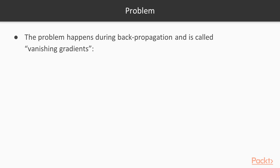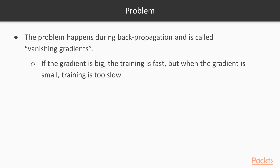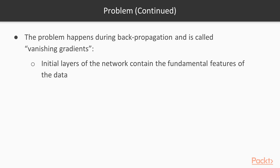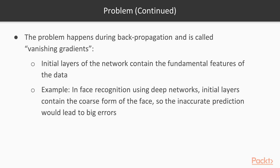Because there is a fundamental problem in training deep learning models. The problem happens during the backpropagation process, and it is called vanishing gradients. When the gradient is big, the training would be fast, but the problem is when the gradient is small, which will slow down the training process. The gradient is big at the beginning of the backpropagation process, which is the last layer, and it is much smaller for the first layers, so it vanishes when we reach the first layers.